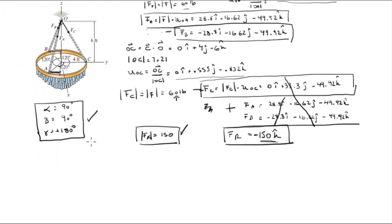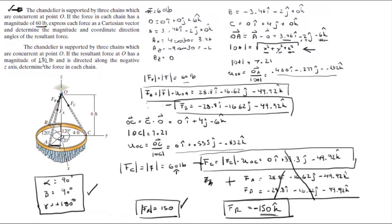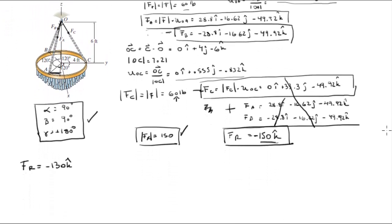Now for the second problem, which with all the values we already have is pretty easy. We know the resultant force is -150k, but now pretend the resultant force is -130k instead. What would the forces in each chain be? Since all three forces are equal, if we find FC we find all forces.